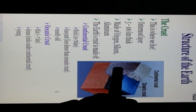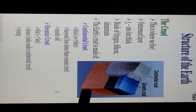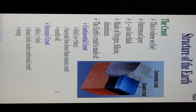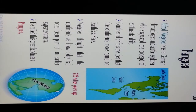The Earth's crust includes continental crust on the continental part and oceanic crust on the oceanic part. The crust is the outermost layer, 5 to 100 kilometers thick, made up of oxygen, silicon, and aluminum. The continental crust is 10 to 70 kilometers thick and less dense than oceanic crust. The oceanic crust is approximately 7 kilometers thick, denser, and younger.